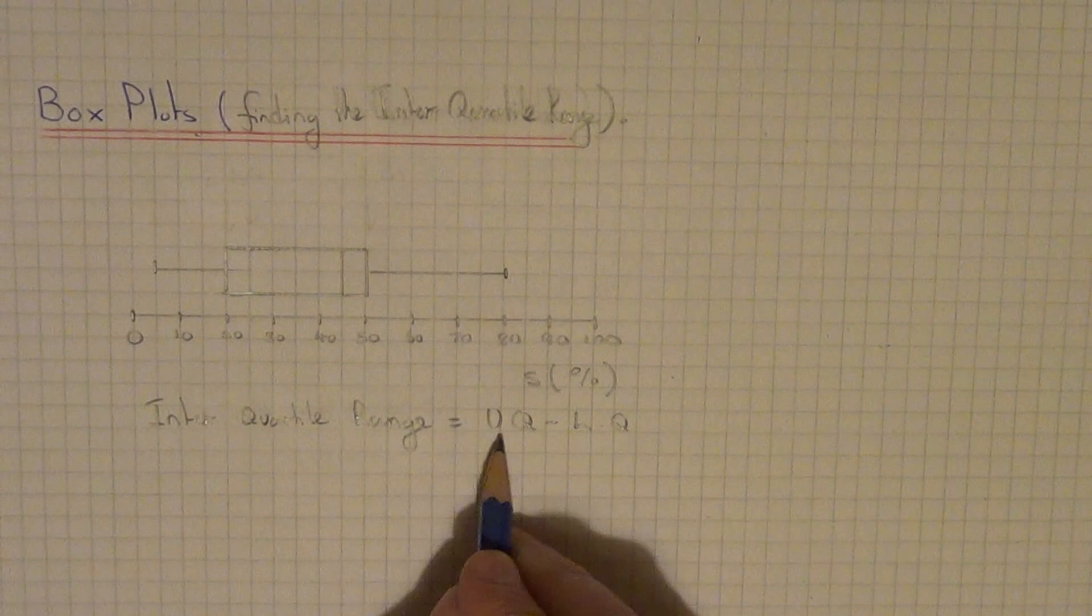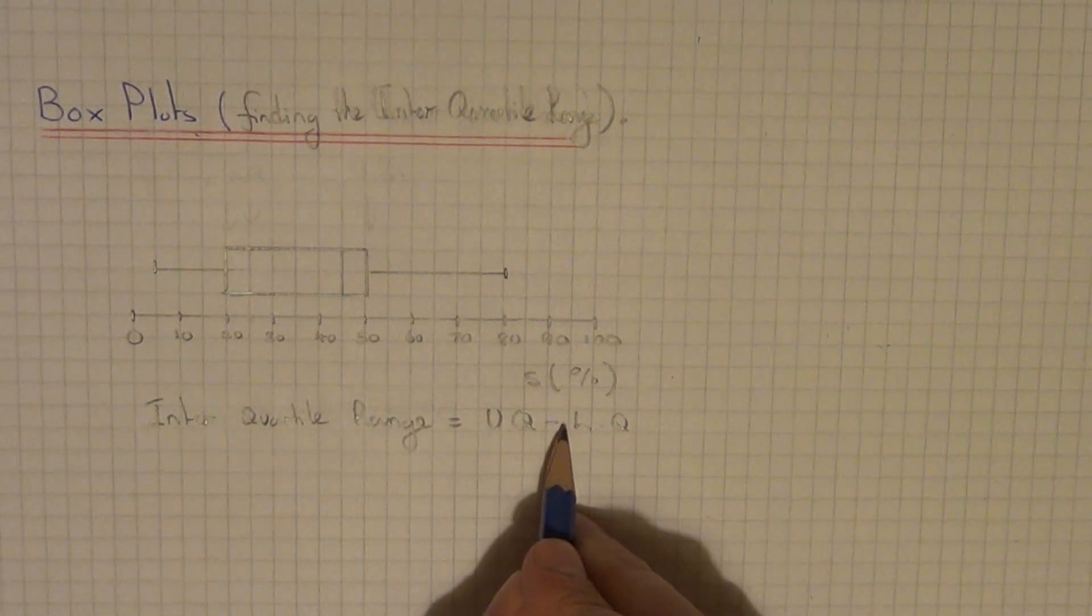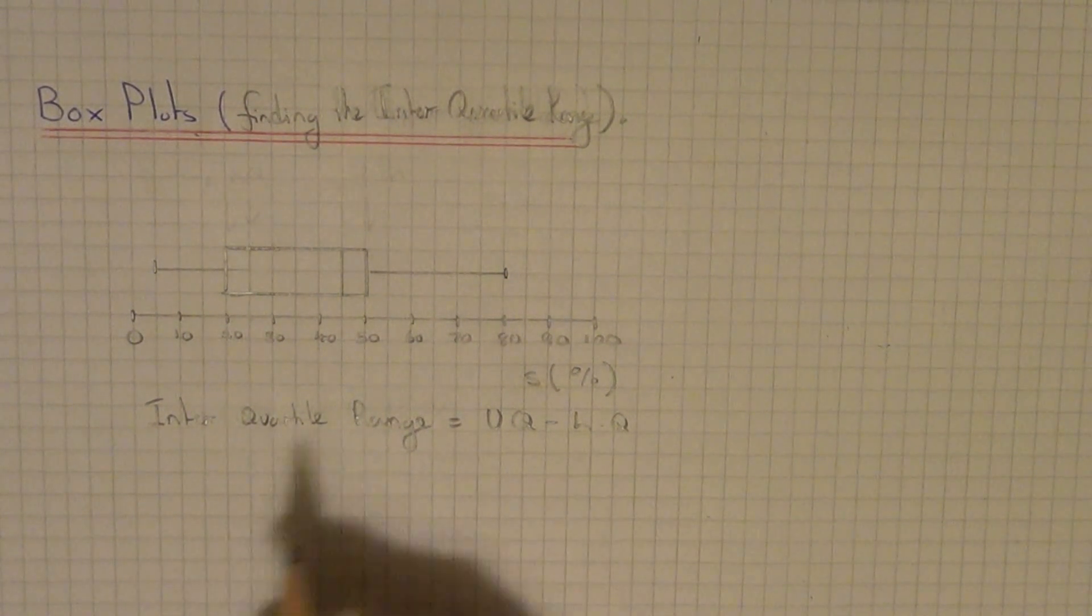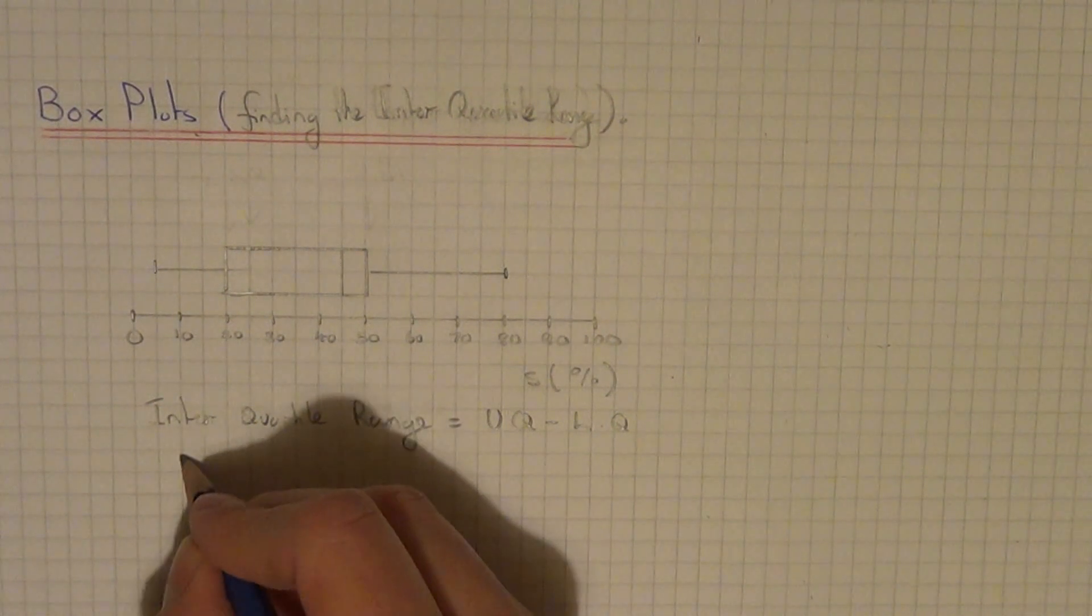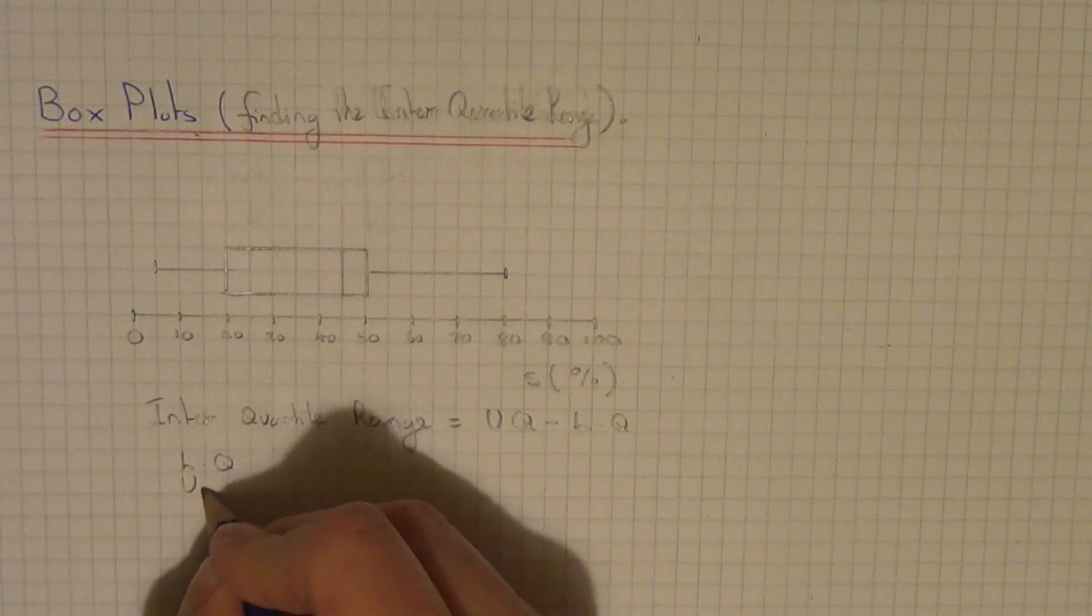The interquartile range is the upper quartile take away the lower quartile. Let's work out what the lower quartile and upper quartile are.